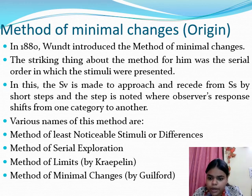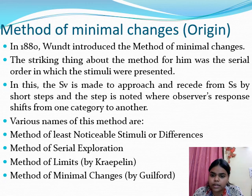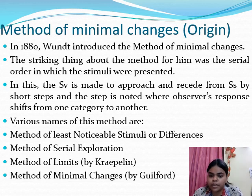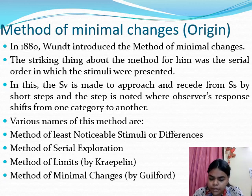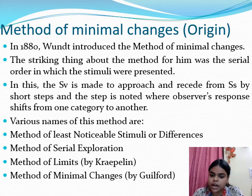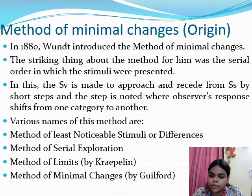The method of minimal changes is named so because we gradually and slowly increase or decrease the stimulus. For example, we start from zero, then 0.5, 1, 1.5, 2, 2.5 — so in an ascending series we go from smaller to larger distances, and in a descending series we go from greater to lesser. The striking feature of this method is the serial order presentation of the stimulus, with two series: ascending and descending.